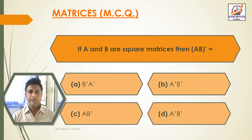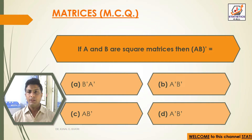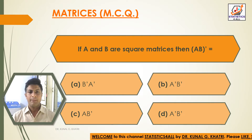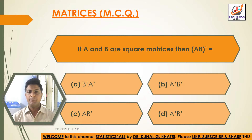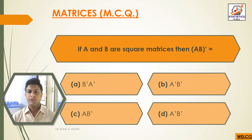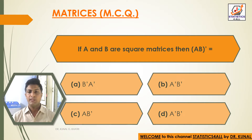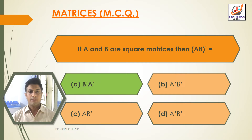Next question: if A and B are square matrices, then (AB)' is equal to — option A: B' into A'; option B: A' into B'; option C: A B'; option D: A' B'. The answer is option A, that is B' A' = (AB)', if A and B are square matrices.